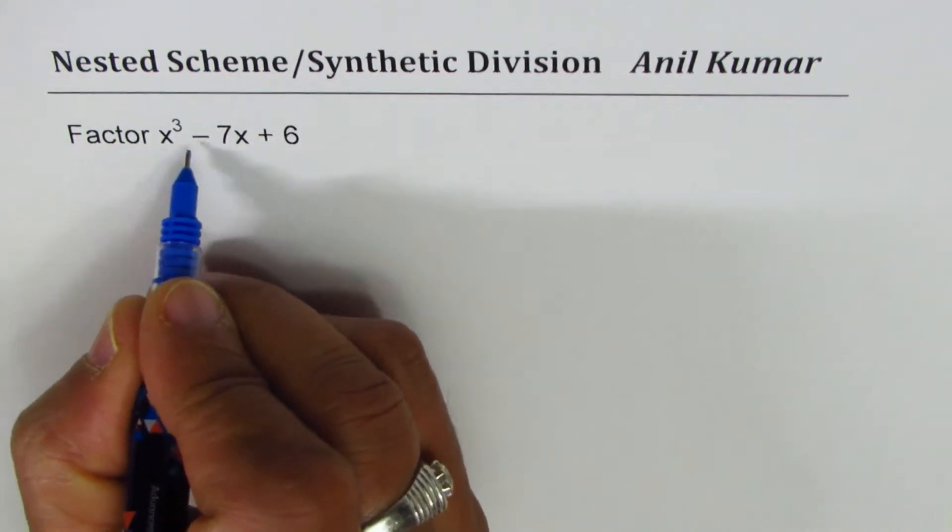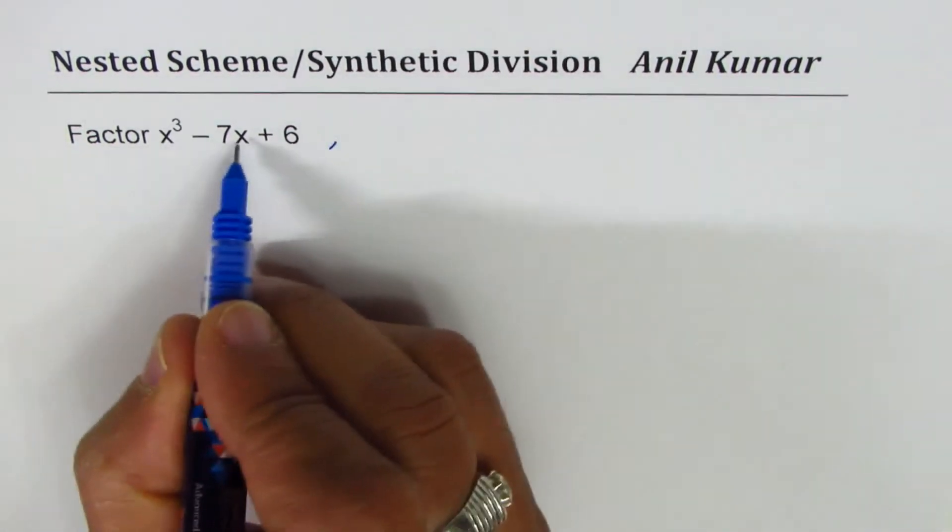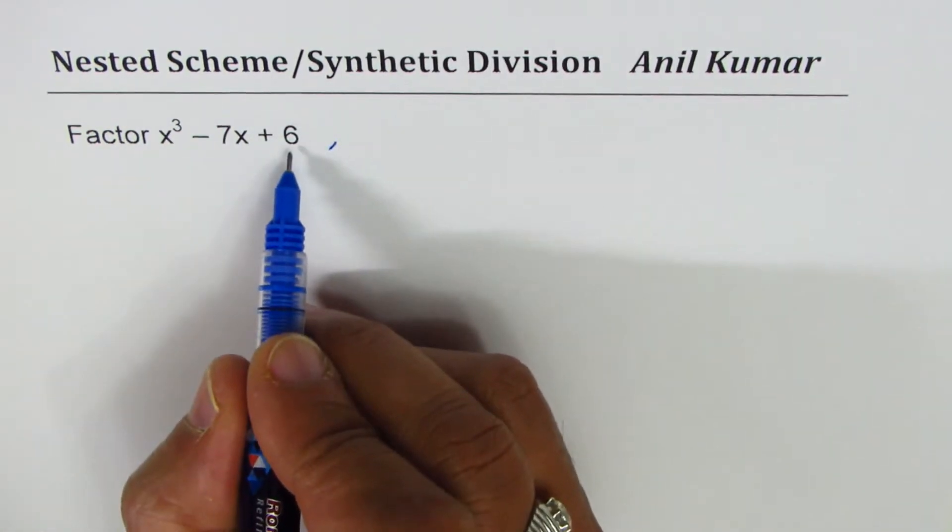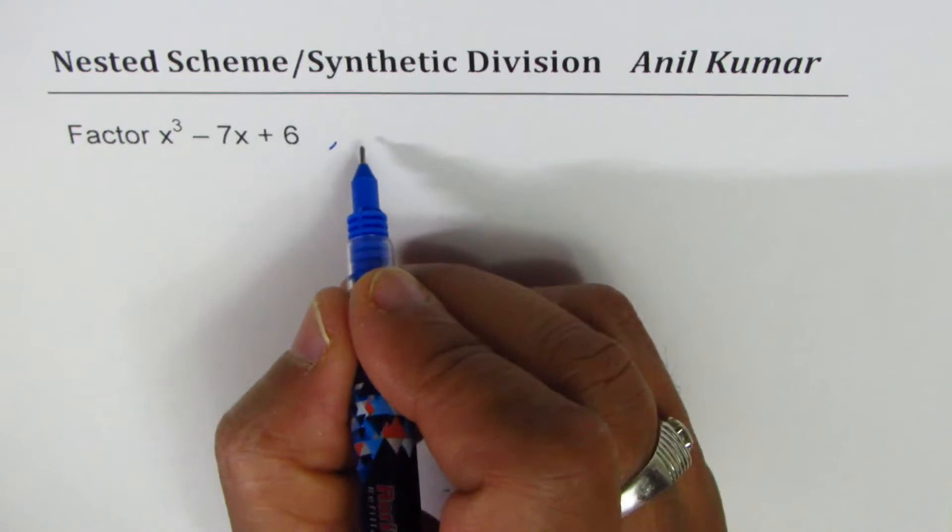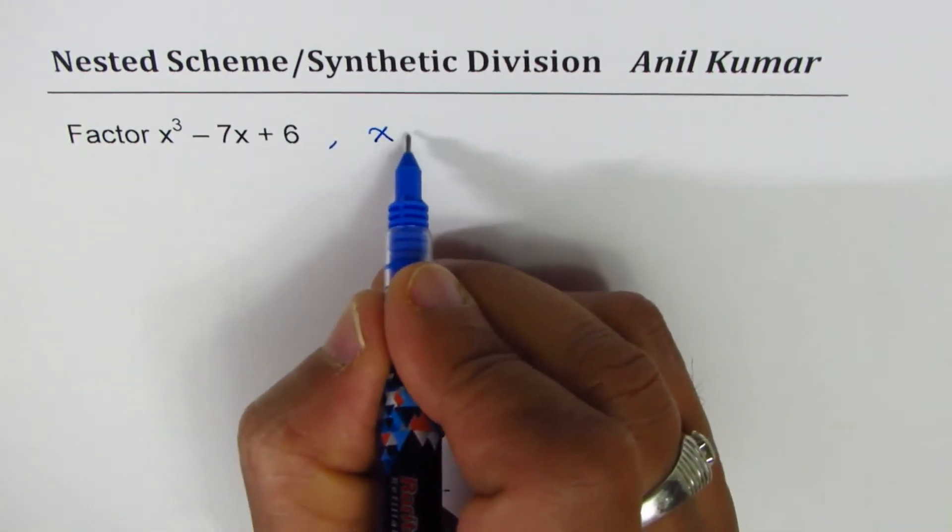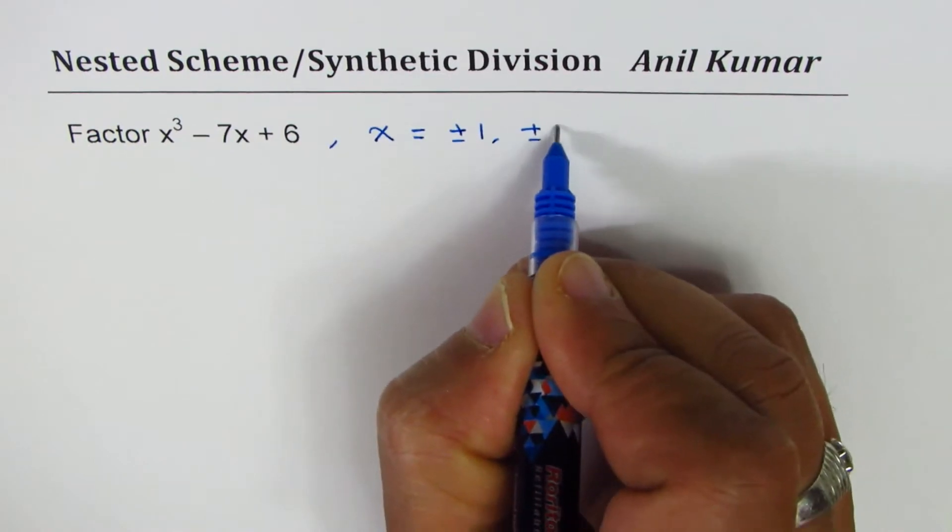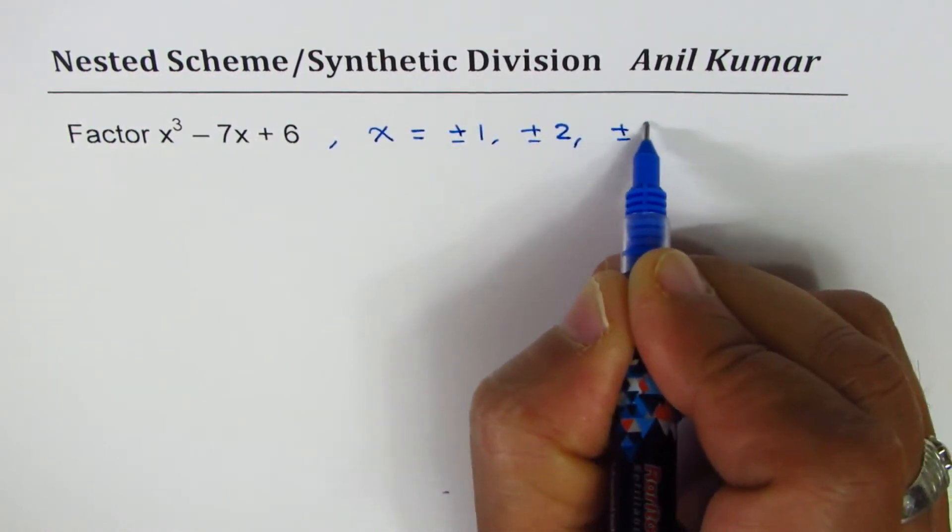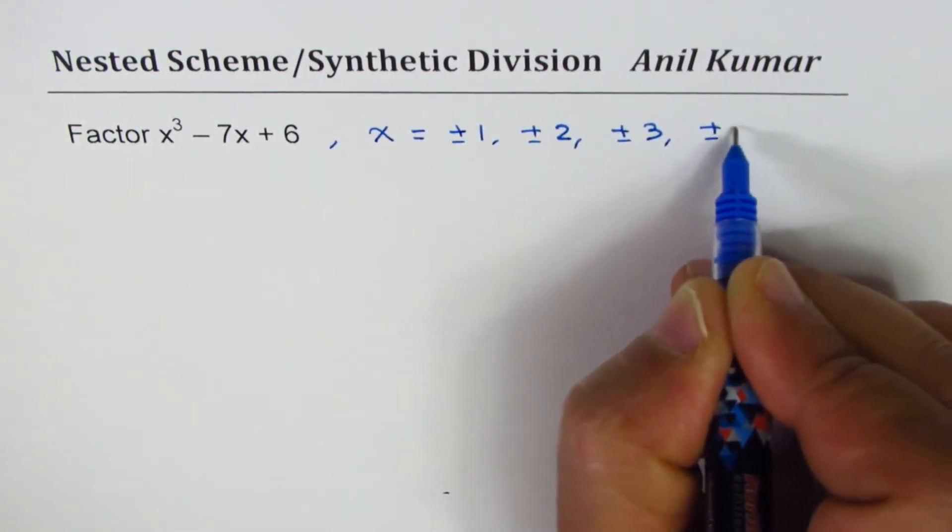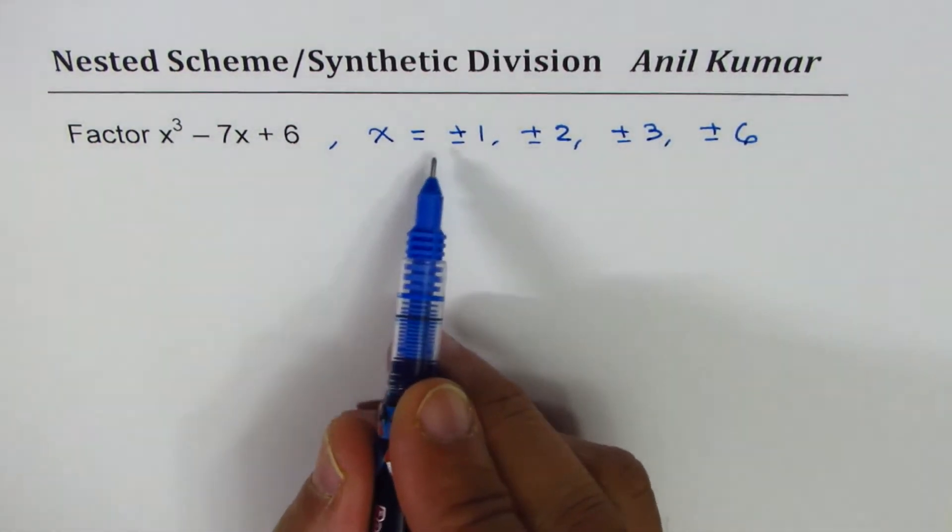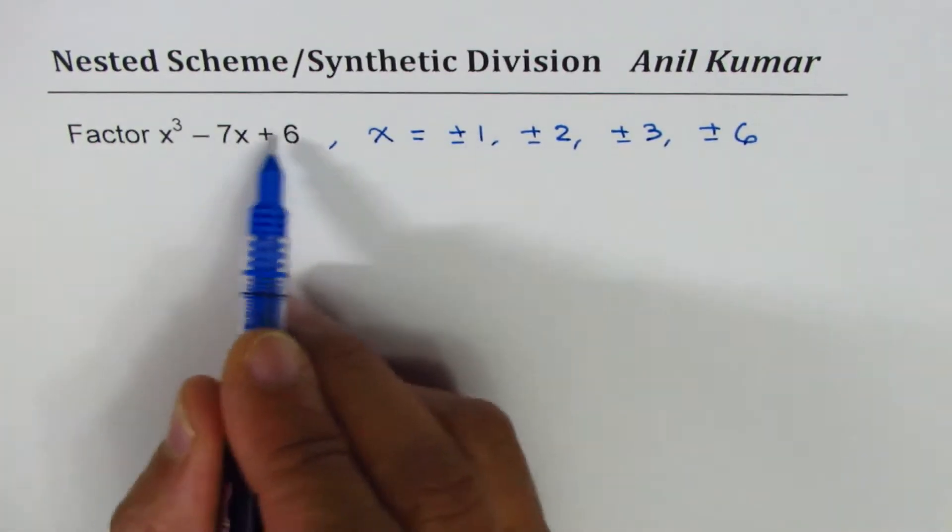So what could be the values of x which could lead to factoring of this cubic equation? Those are all factors of 6, so we'll test the values of x as equal to plus minus 1, plus minus 2, plus minus 3, and plus minus 6. These are all possible factors.